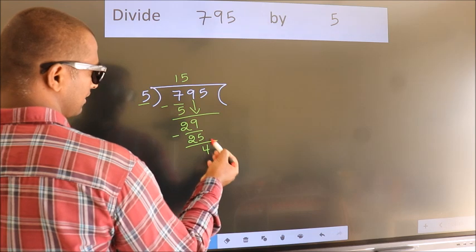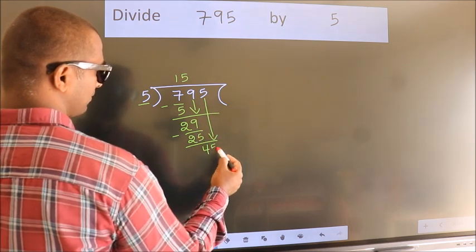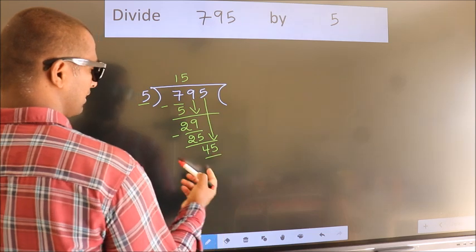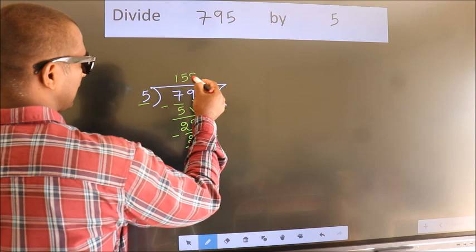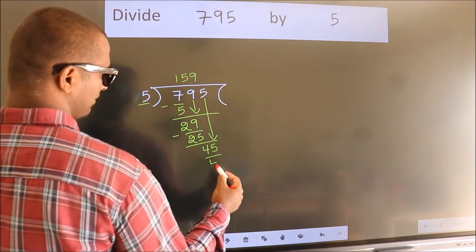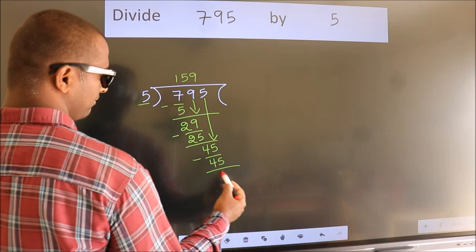After this, bring down the beside number. So 5 down. So 45. When do we get 45 in the 5 table? 5 nines 45. Now we subtract. We get 0.